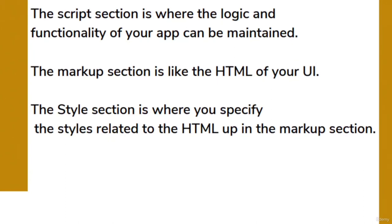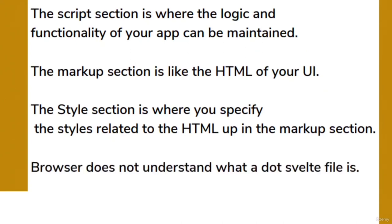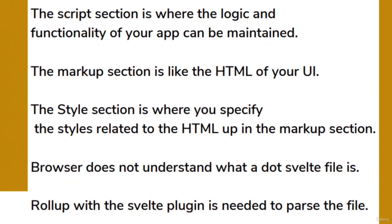In Svelte, instead of dividing the codebase into three huge layers which come together to form the UI, it is divided into one or more .svelte files where each file is responsible for its own markup, styles and logic. The browser does not understand what a .svelte file is, so Rollup with the Svelte plugin parses the file, extracts each of the three sections, and assembles them back into a format browsers can understand. Since we are using the Svelte template repo, all of this is already taken care of for us.